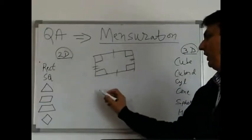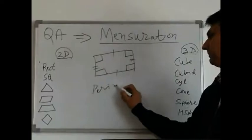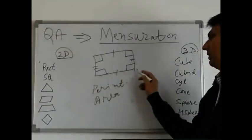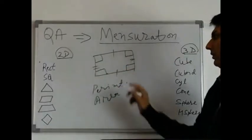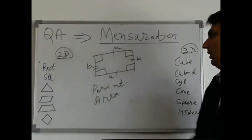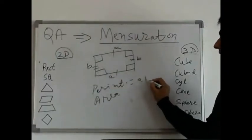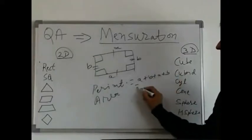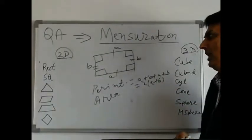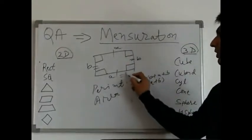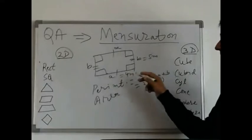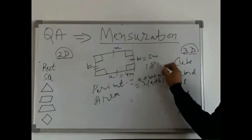In any 2D figure in mensuration we have to find two things: perimeter and area. Perimeter is the total sum of the lengths of the four sides. So if this side is A, this is B, this is also A, and this is also B, then perimeter is 2 into A plus B. If A equals 4 meters and B equals 5 meters, then the perimeter of this rectangle will be 4 plus 5 equals 9, and 9 into 2 equals 18 meters.